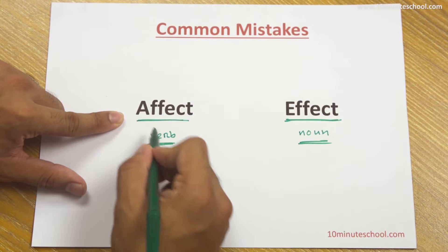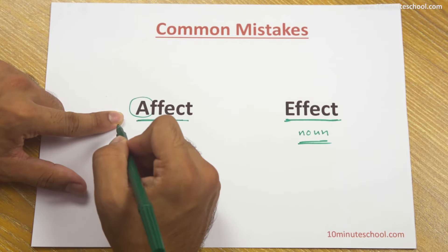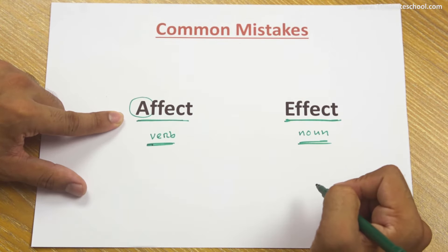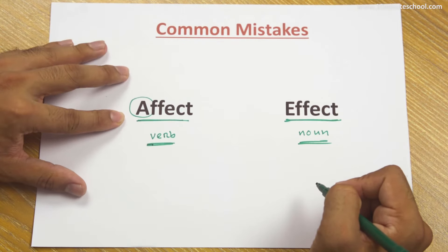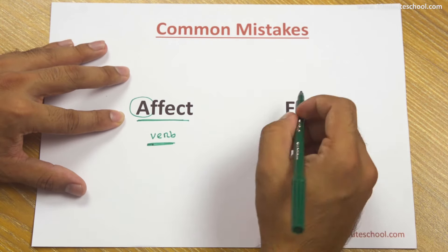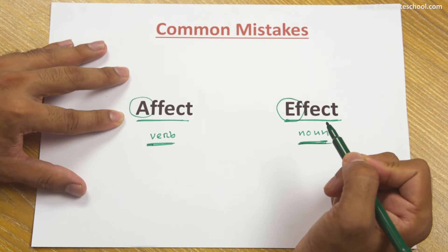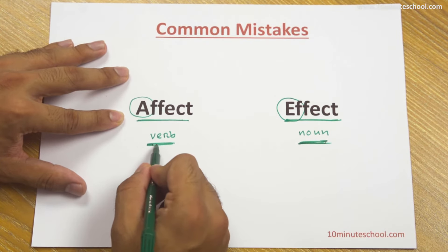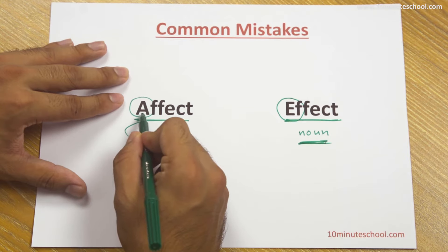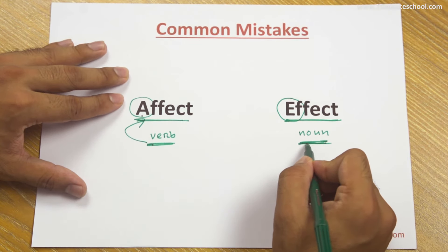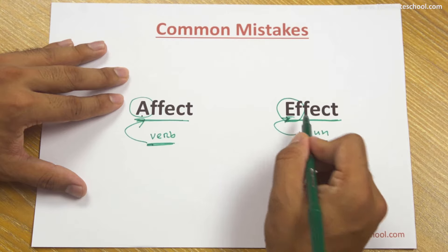So the effect of the flood was very bad. This is the noun we use. Whenever we use the verb, we use affect with 'a'. And whenever we use the noun, effect is with 'e'.